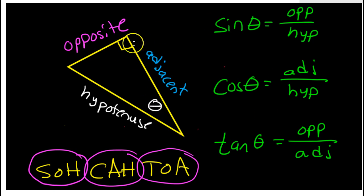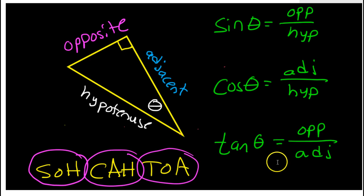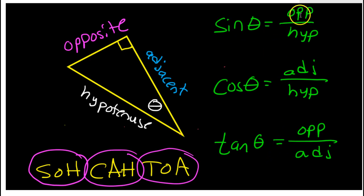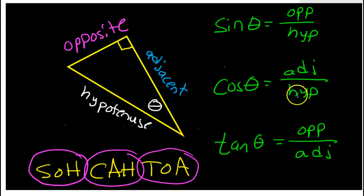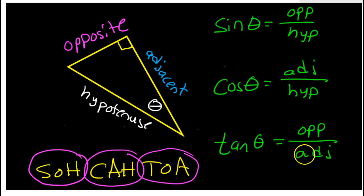With that in mind, here are the definitions: the sine of angle theta is the opposite leg over the hypotenuse. Cosine is the adjacent leg over the hypotenuse. And tangent is the opposite leg divided by the adjacent leg.